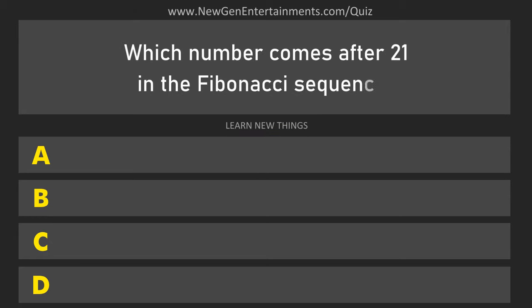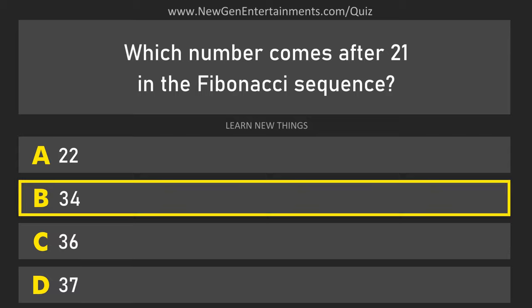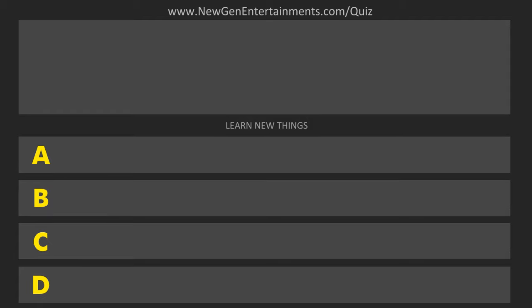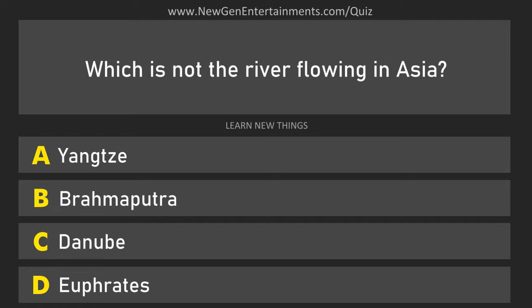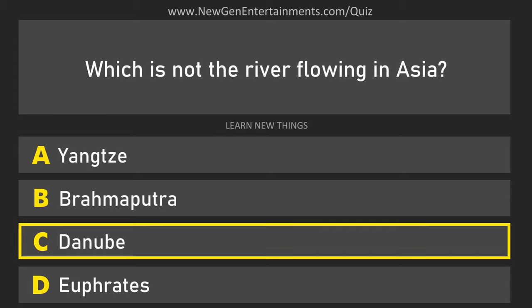Which number comes after 21 in the Fibonacci sequence? 34. Which is not the river flowing in Asia? Danube.